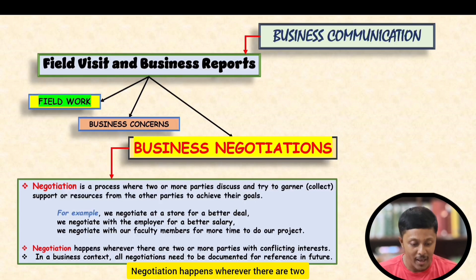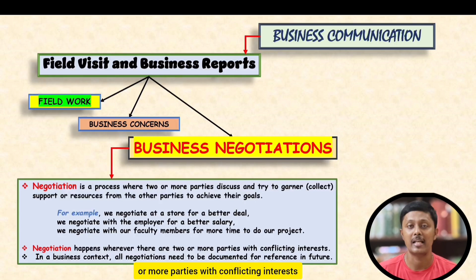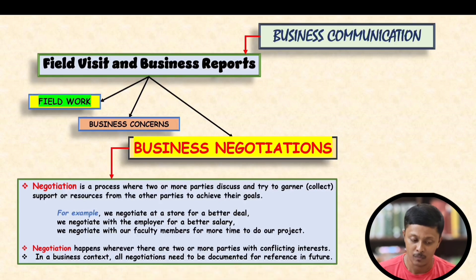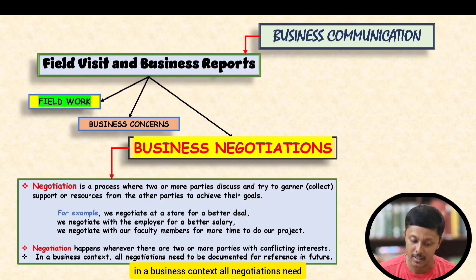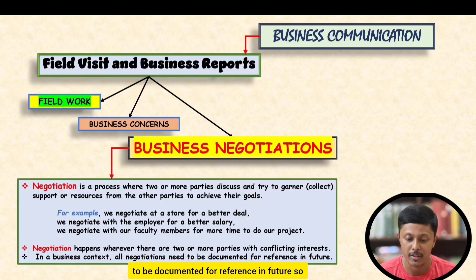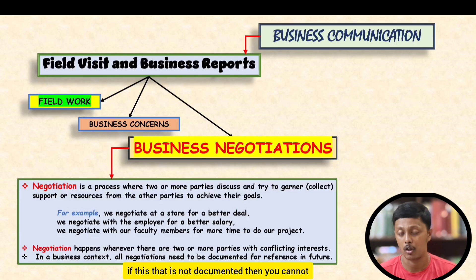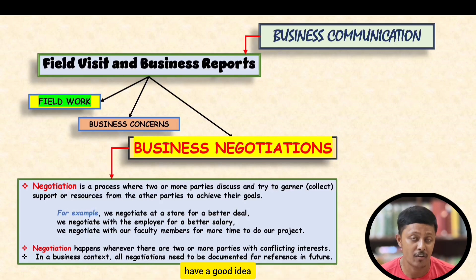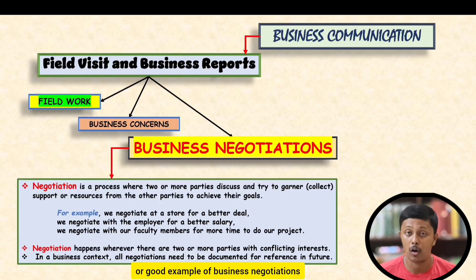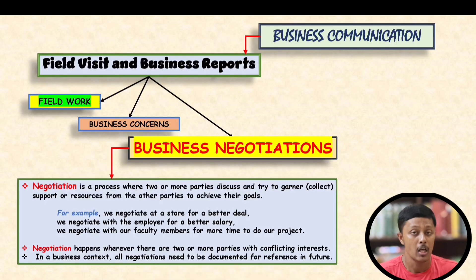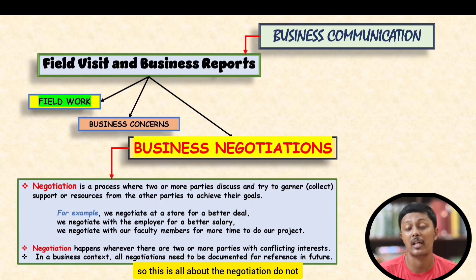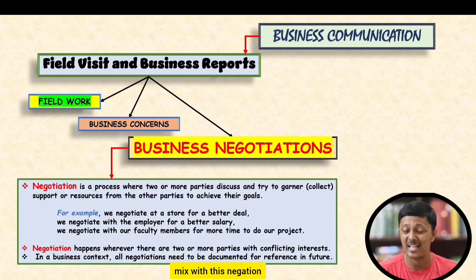Negotiation happens wherever there are two or more parties with conflicting interests. In a business context, all negotiations need to be documented for future reference, so that you have a good record and example of business negotiations.